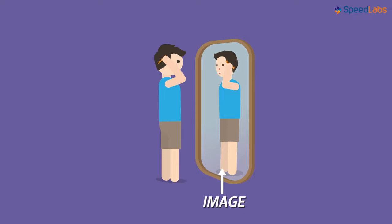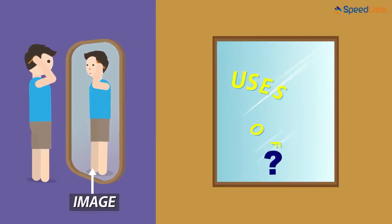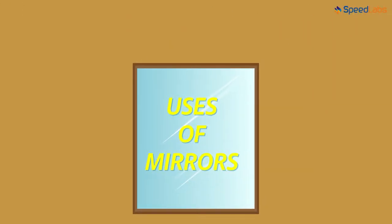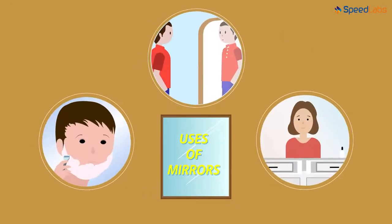Whatever actions we perform are imitated by our image. Besides combing our hair, where else do we use the mirror? We use mirrors in so many daily life actions that we don't even realize that we're using them. We human beings use them mostly for beautification purposes.